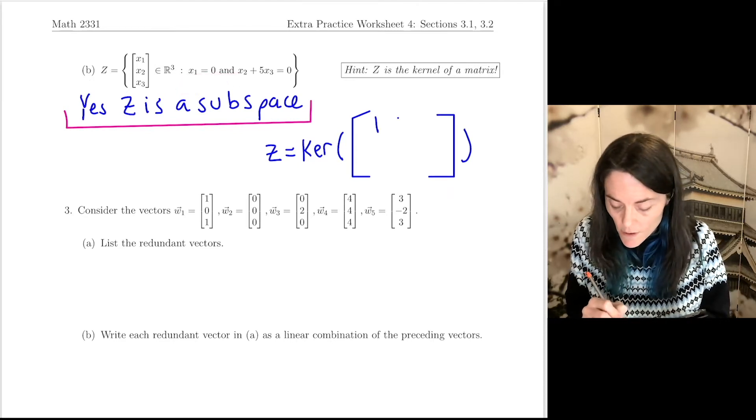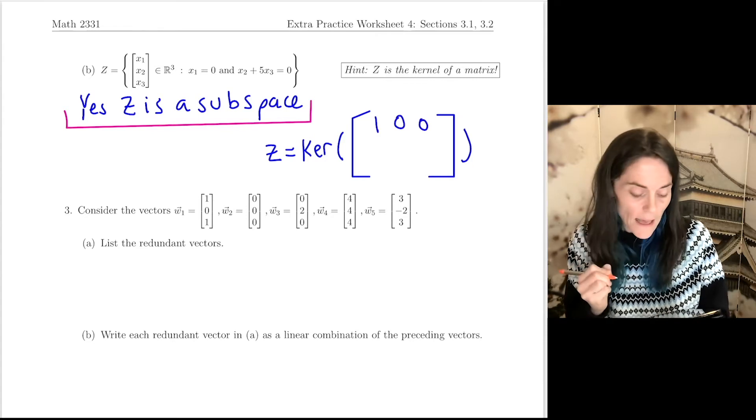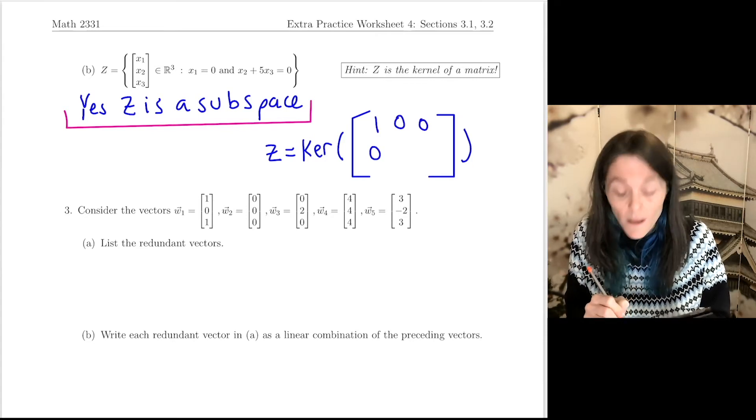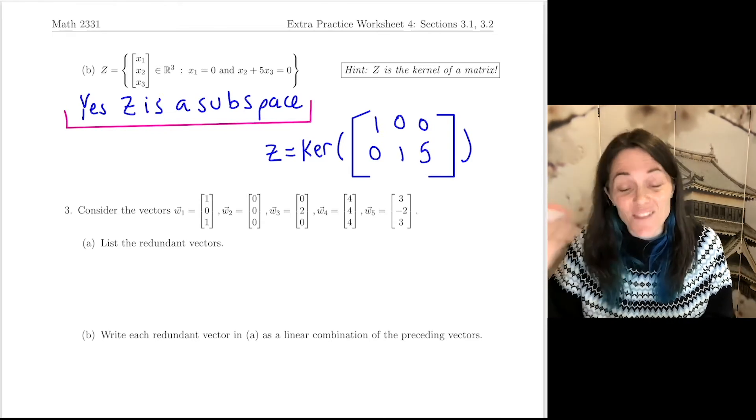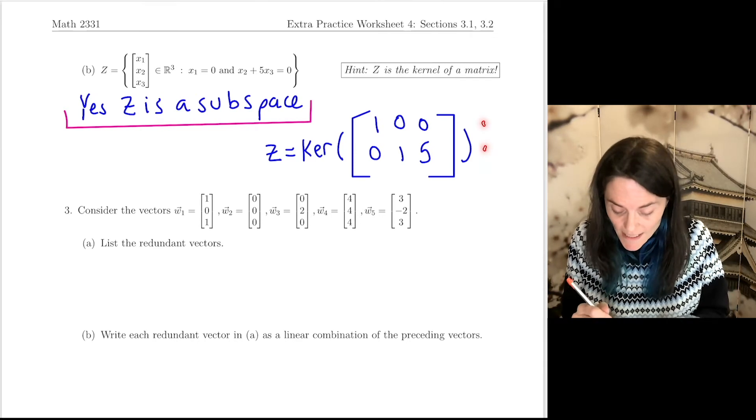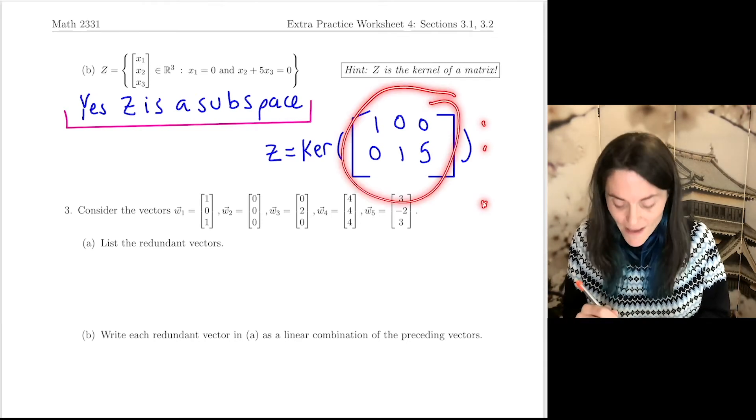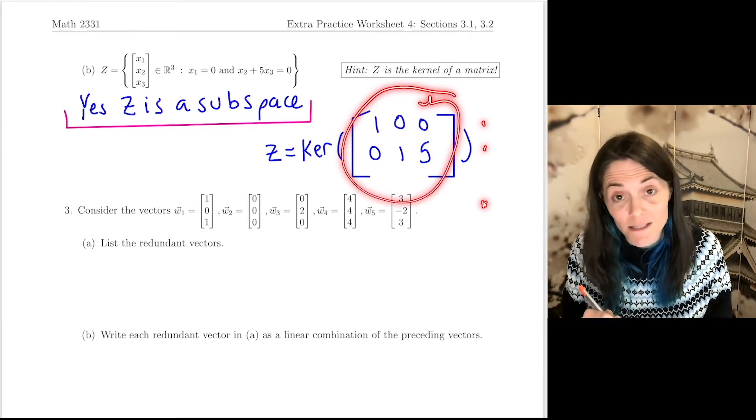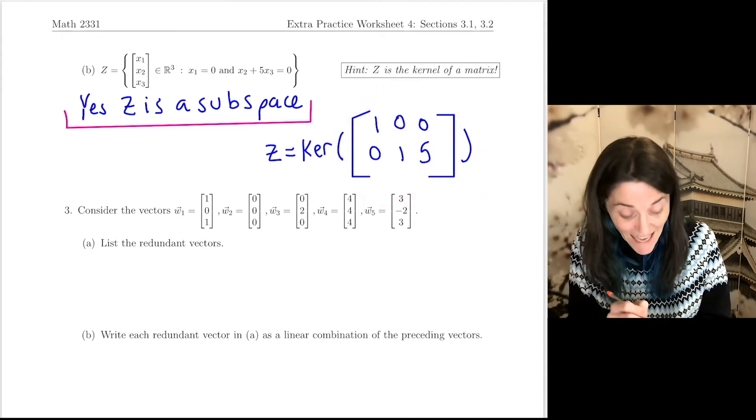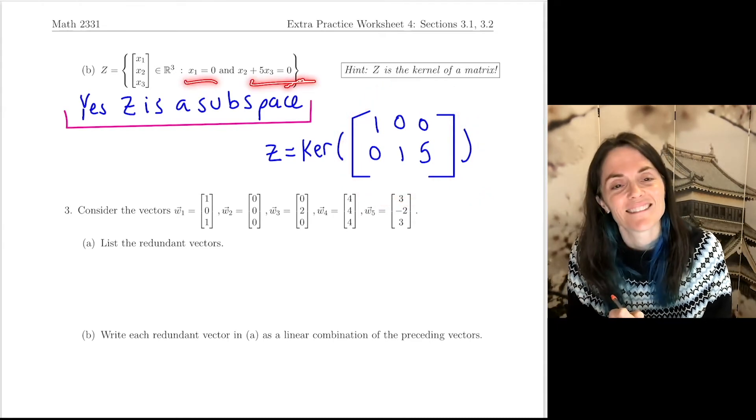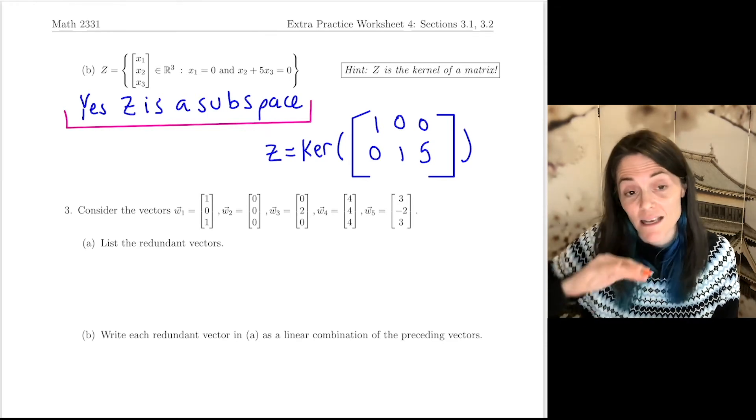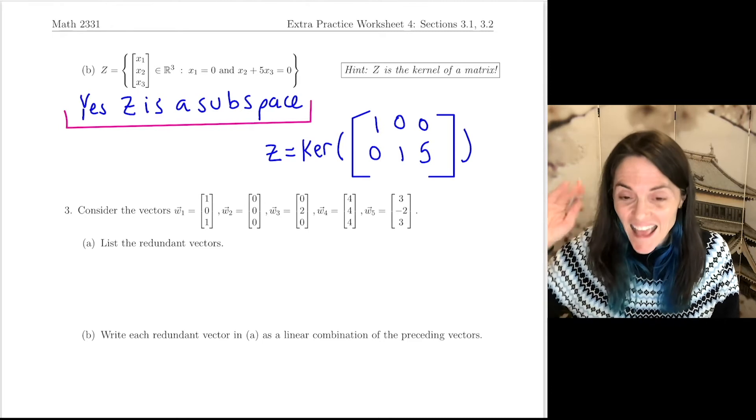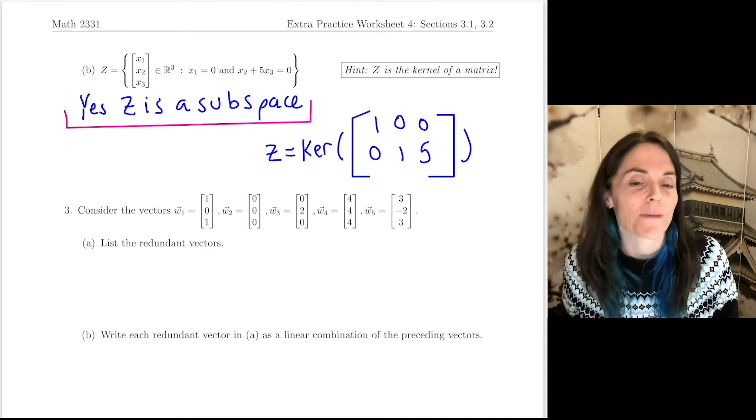And we can write down the matrix right here because we can read it off. It says X1 is 0, and it also says X2 plus 5X3 is 0, like this. Now, if you take a vector X1, X2, X3, multiply by this matrix, and you set that equal to 0, you get exactly these two. So without a doubt, Z is a subspace, and Z is the kernel of this matrix.